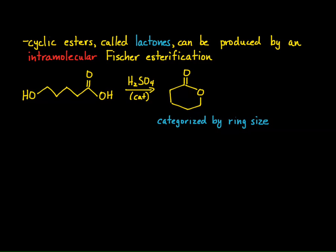Lactones are categorized by ring size. You label the carbons coming off the carboxylic acid: the carbon attached to the carboxylic acid is the alpha carbon, then beta, gamma, and delta. Locating those carbons on the ring — alpha, beta, gamma, delta — the delta carbon bears the OH that generated the ester. So six-membered cyclic esters are called delta lactones.